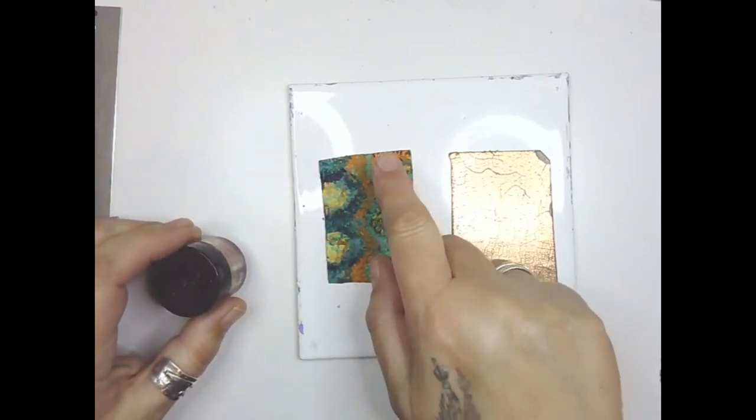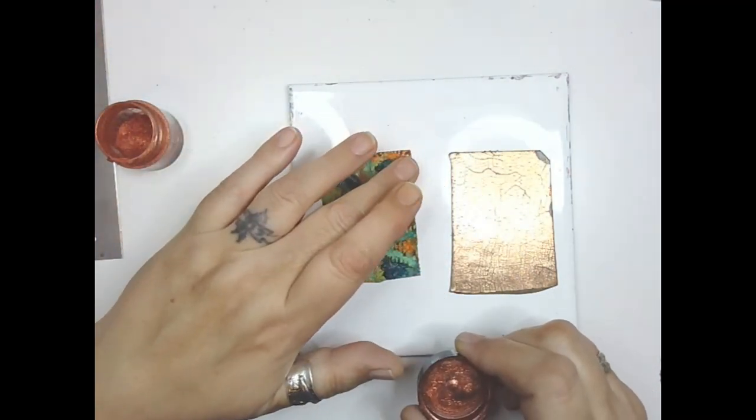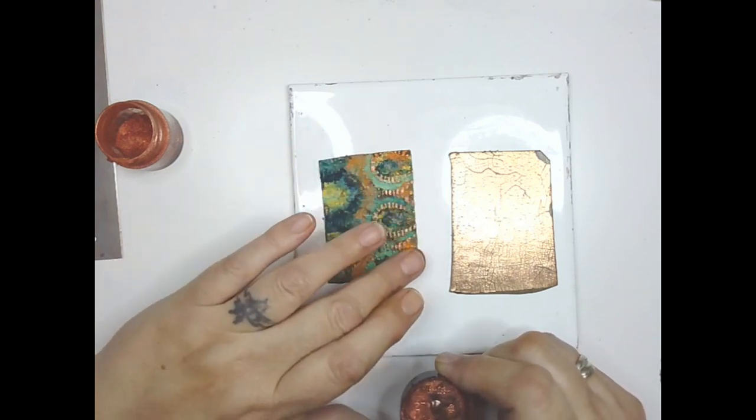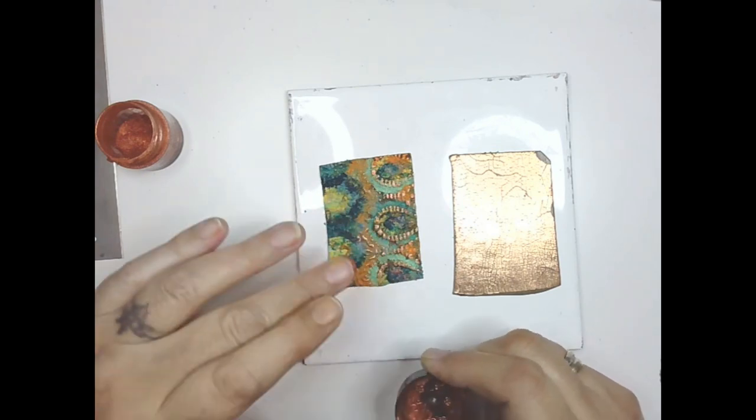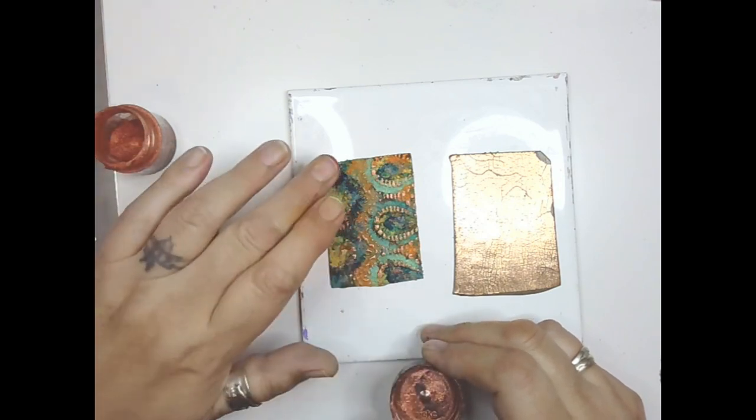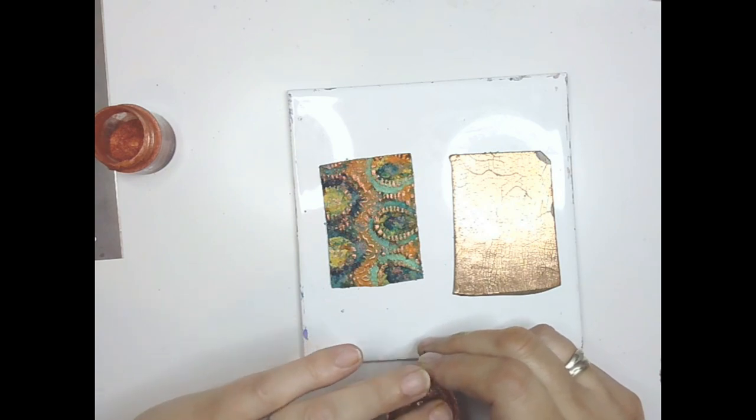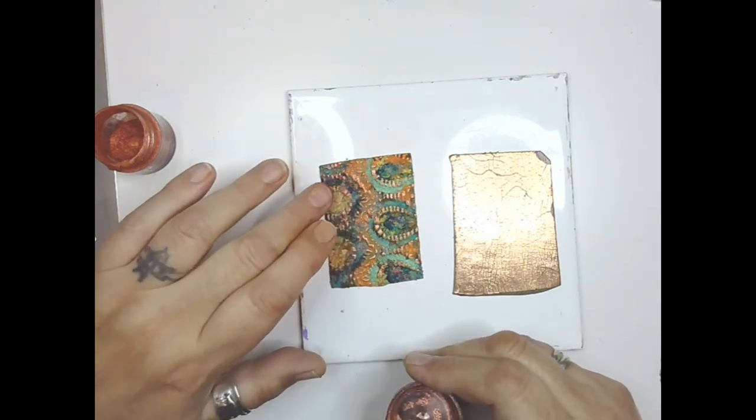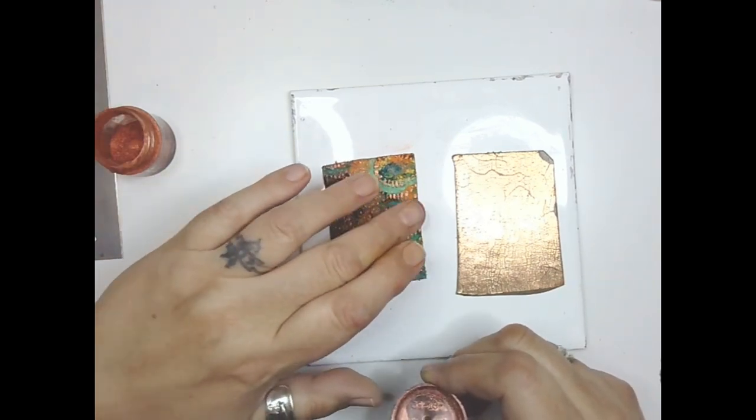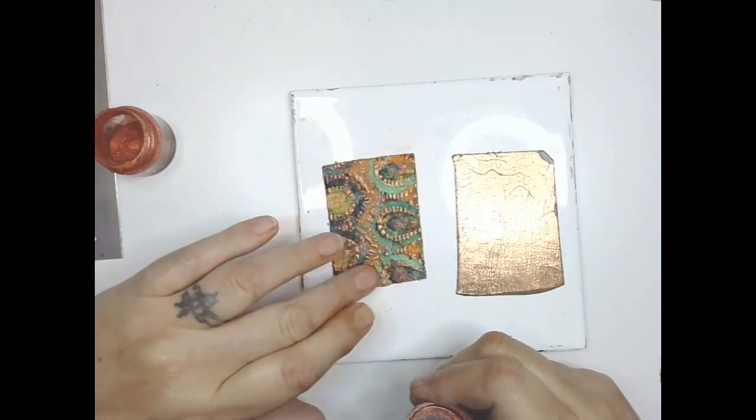Now it's dry, I'm just going to put some copper mica over the top to try and bring out the pattern because it's kind of lost at the moment. I'm just gently going over it and then all the pattern starts to appear again. Remember it's a grunge sort of style, so there's no need to get anything perfect.